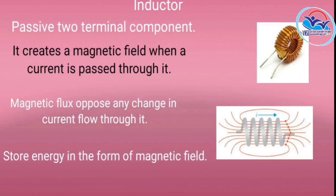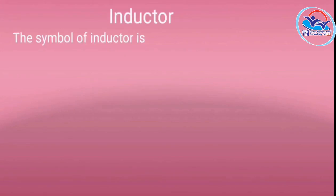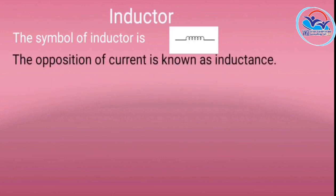An inductor is a passive two-terminal component used to store energy in the form of a magnetic field. When current flows through the coil, a magnetic flux is formed, and that magnetic flux opposes the flow of current.